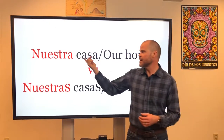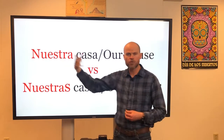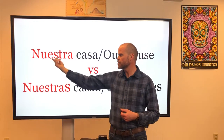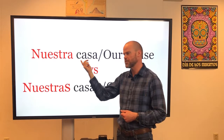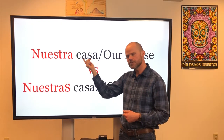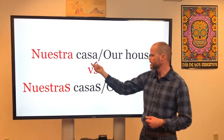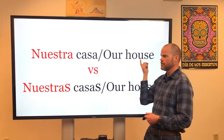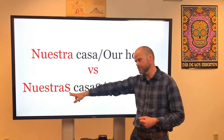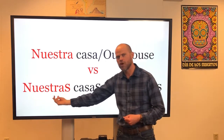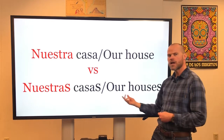Here we have casa. The word casa is feminine and singular. With our nuestro form, nuestro has to reflect the object that's being possessed. Since it's singular and feminine, it's going to be nuestra casa — "our house." What happens when I make this plural? I just add an S, so now it's going to be nuestras casas — "our houses."